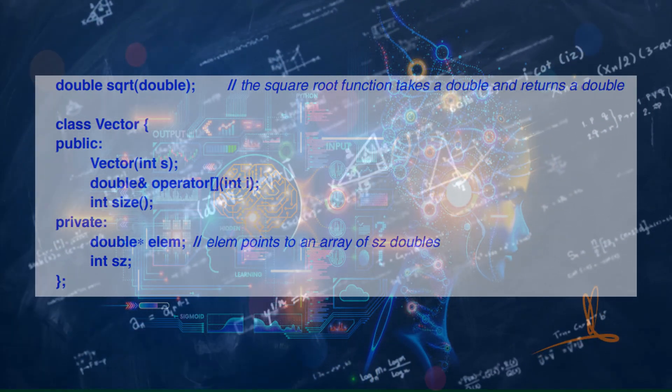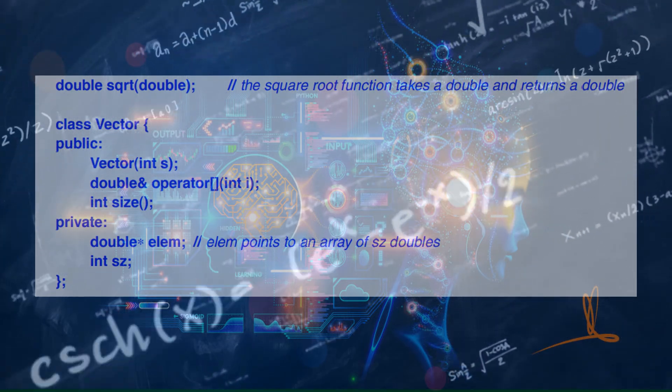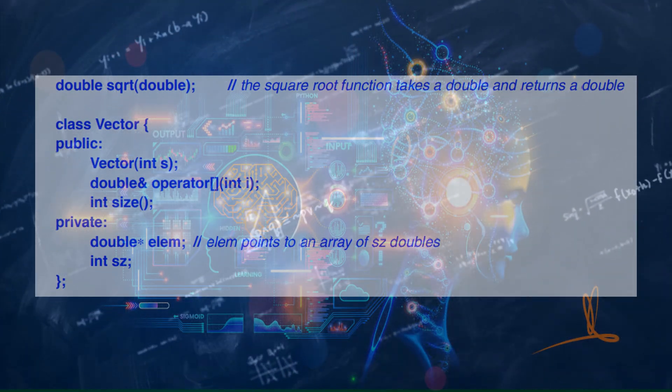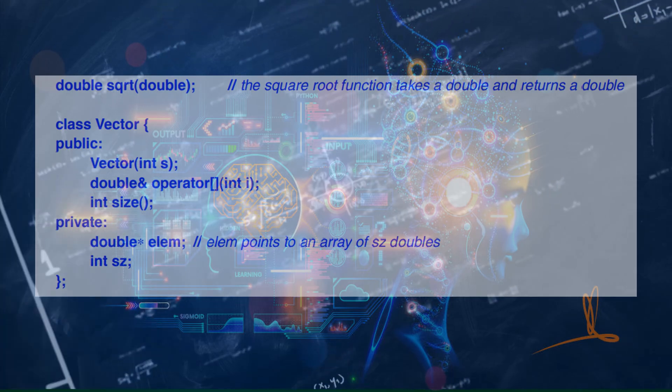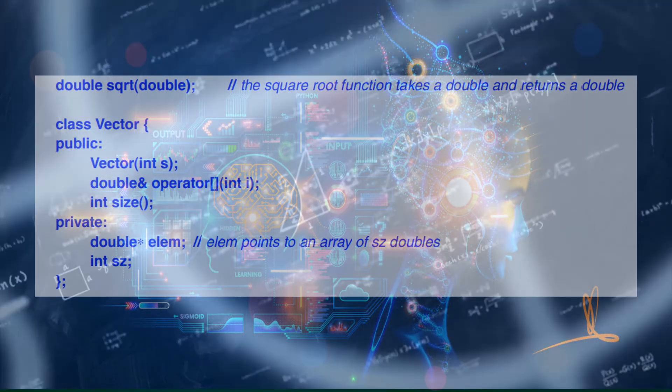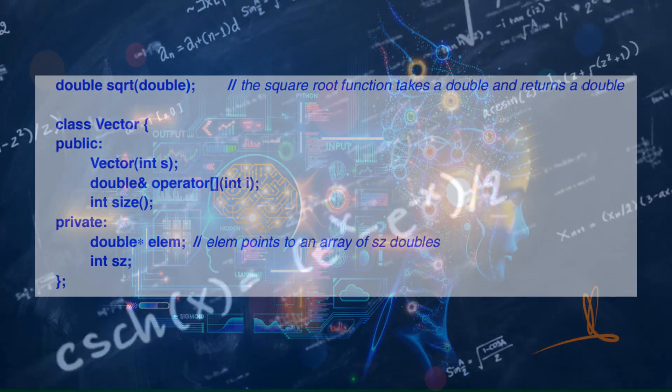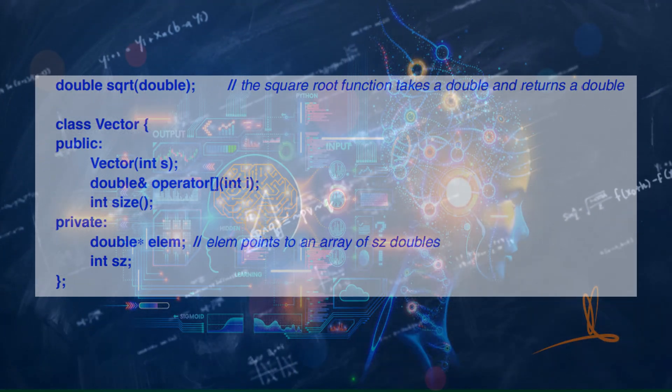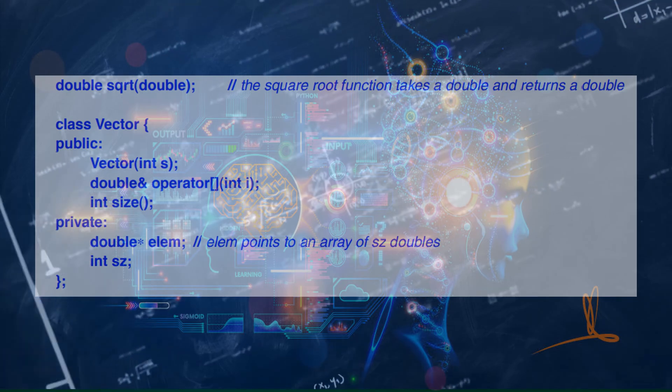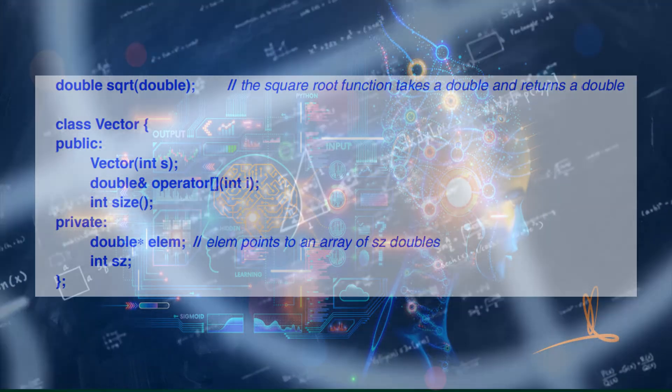class Vector { public: Vector(int s); double& operator[](int i); int size(); private: double* elem; // elem points to an array of sz doubles int sz; };